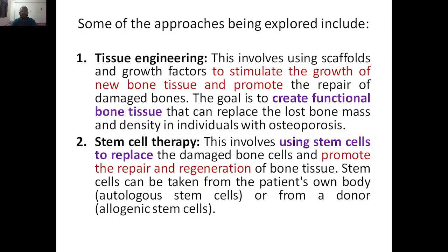Next is stem cell therapy. We use stem cells to replace the damaged bone cells so that they promote the repair and regeneration of bone tissue. Stem cells can be taken from the patient's own body — these are called autologous stem cells — or from another person's body, which are called allogenic stem cells. Usually we prefer autologous stem cells to avoid complications.